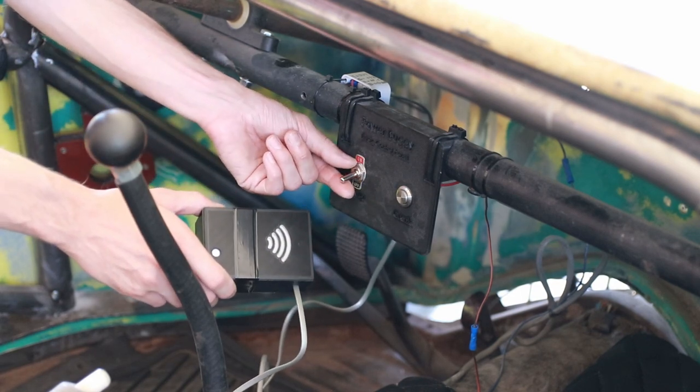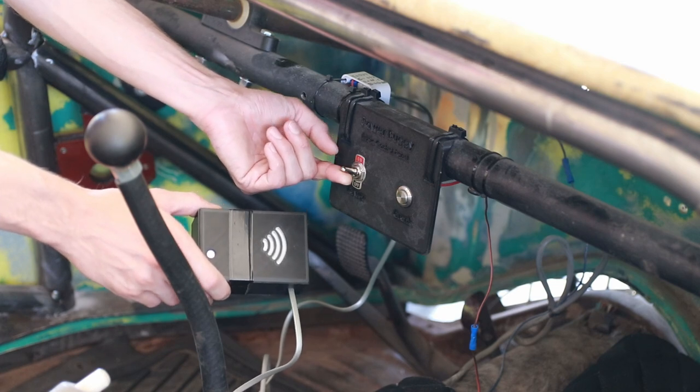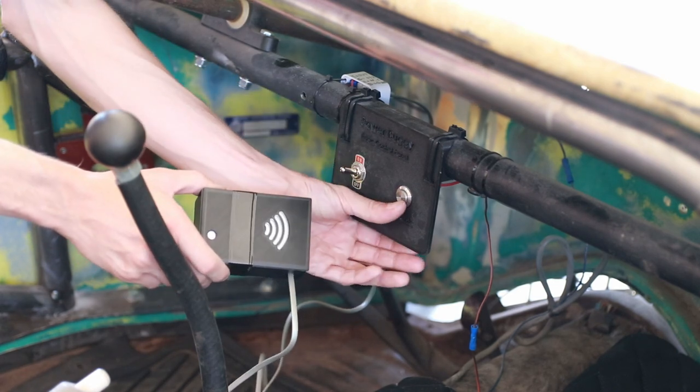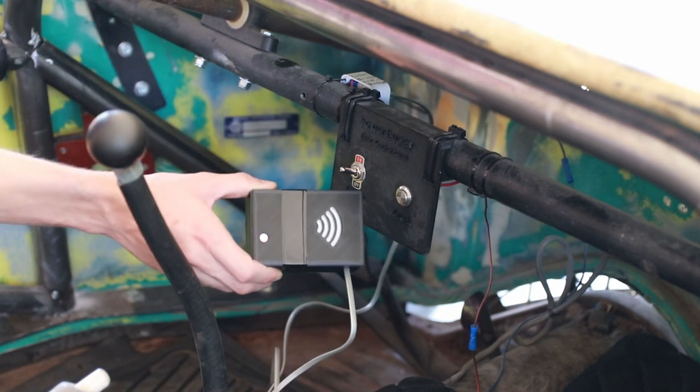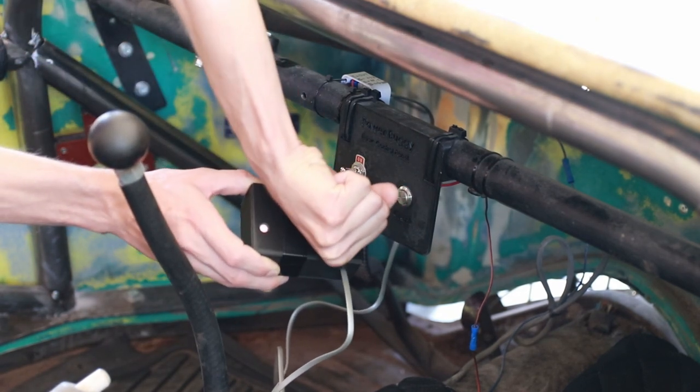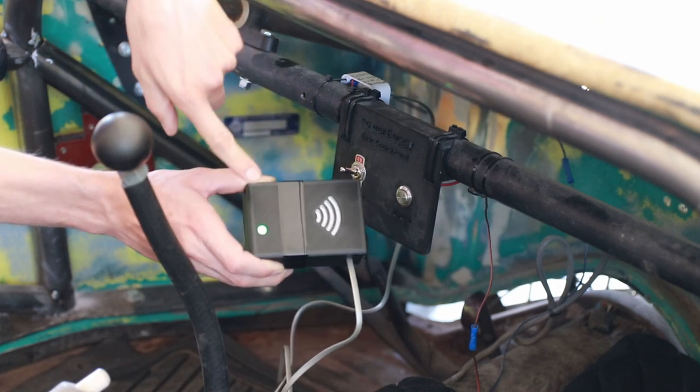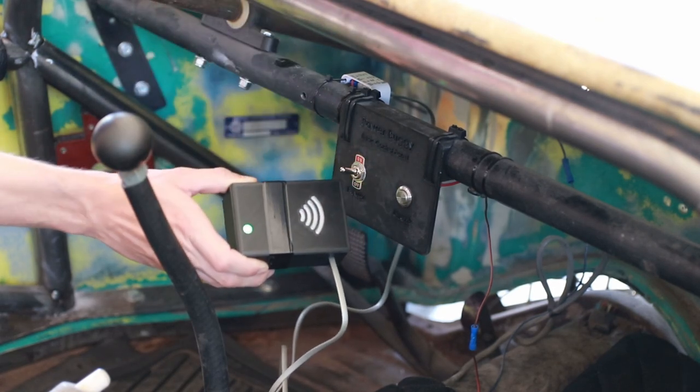I'm going to turn on the main ignition switch, and now I'm going to try to crank the engine. As you can see, the engine cranking will not work if the light is red. However, once I've scanned and presented the NFC record, the light will turn green and I can then start the vehicle.